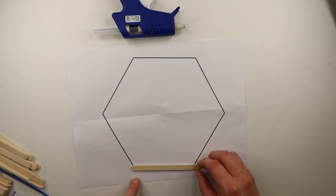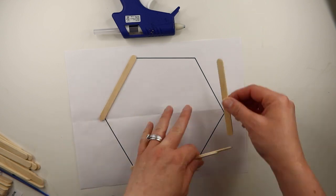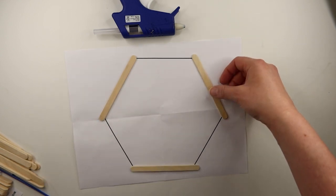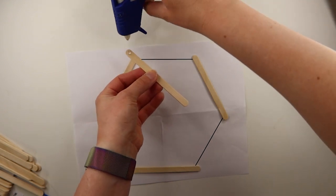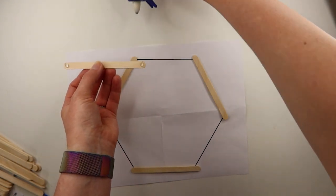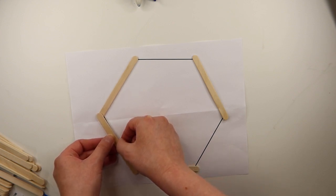Place a popsicle stick on every other side of the hexagon. Make sure these popsicle sticks are as accurately lined up on the template as possible. Next, add some hot glue to each end of one side of a new popsicle stick and press it down in one of the available gaps so that it connects with the ends of the popsicle sticks already on the template.